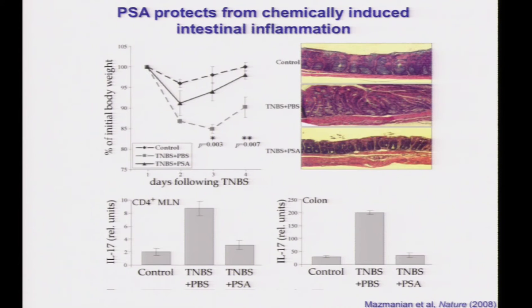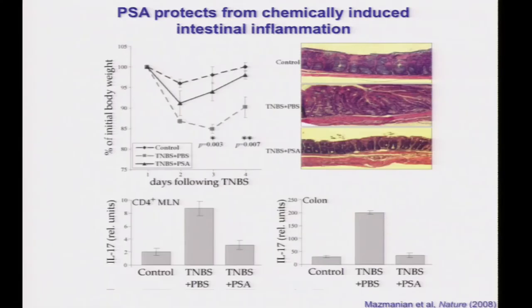We became interested in how PSA impacts the host during colonization and symbiosis. Many years ago we wondered whether this organism and this particular molecule would be protective in models of inflammatory bowel disease. We chose IBD because of its proximity to the microbiota. Using the TNBS model of colitis, we see acute weight loss in mice after induction of disease, but animals fed PSA orally are ameliorated from the weight loss, and the colon is essentially unremarkable.